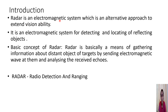Radar is an electromagnetic system. We are considering the propagation of electromagnetic waves which is an alternative approach to extend vision ability — we are making an inference on what we cannot see. It is an electromagnetic system for detection and location of reflecting objects.